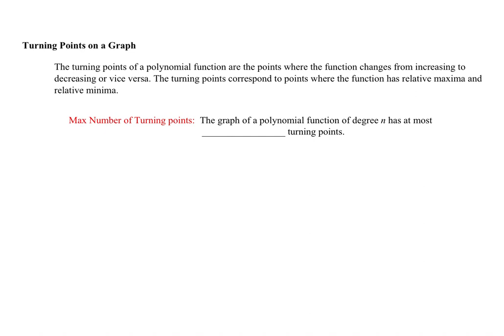The turning points of a polynomial function are the points where the function changes from increasing to decreasing or vice versa. We want to be able to identify the turning points on a graph but also know how many turning points we may have. Turning points correspond to the points where the function has a relative maxima or relative minima.